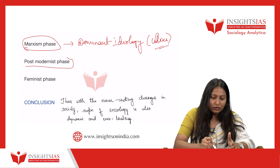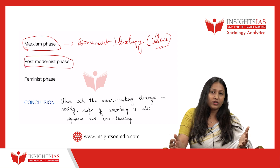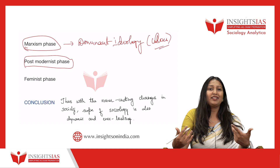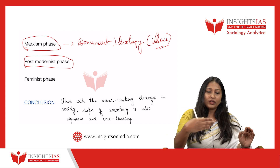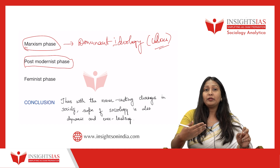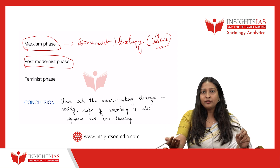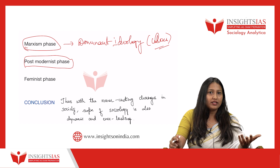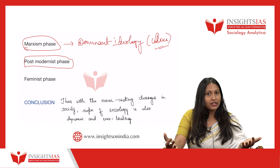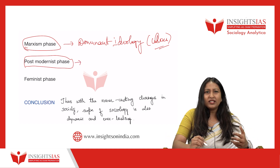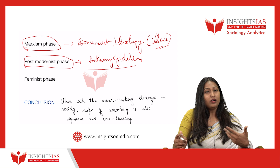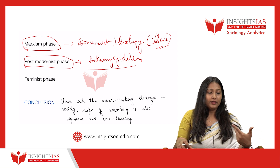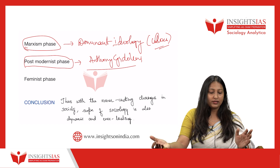In the postmodernist phase, they do not believe in eternal or single truth. What is true today might be false tomorrow. They do not believe in grand theories or generalization. For this phase, you can give Anthony Giddens as an example — he is a very important postmodernist thinker.